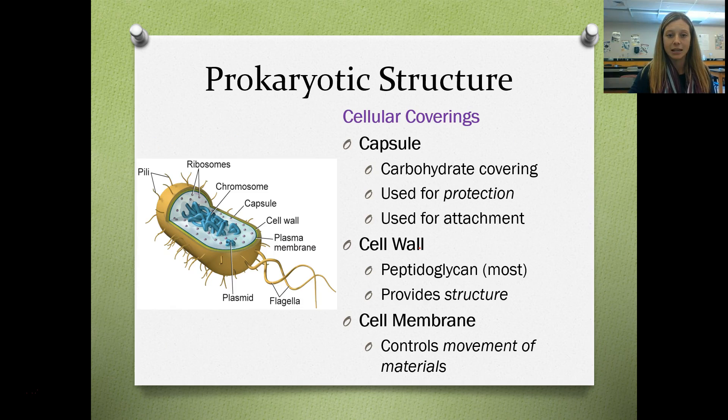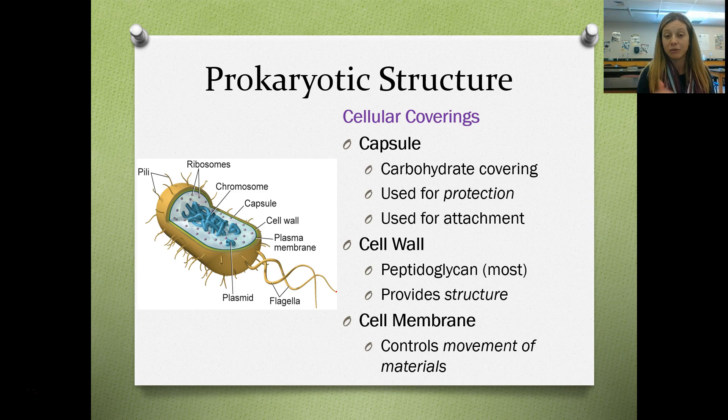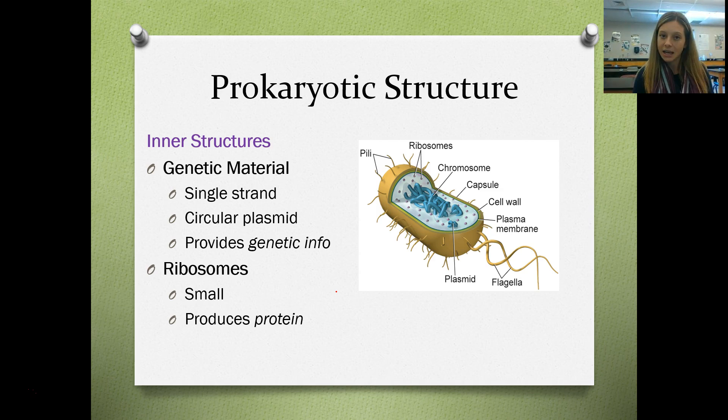The capsule is not to be confused with the capsid — it is a carbohydrate covering used for protection and attachment. Behind that you have the cell wall; in eubacteria this is made of peptidoglycan and provides structure. Just like in all cells, the cell membrane moves materials in and out. Inside the cell you have DNA, cytoplasm, and ribosomes that produce proteins. The genetic material is single-stranded, sometimes in circular forms called plasmids, and it provides the genetic information.